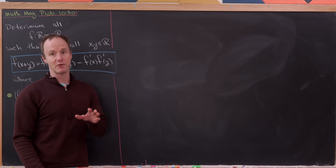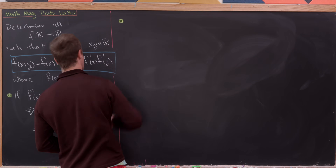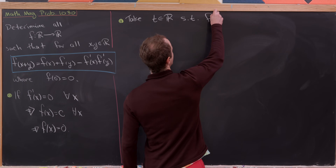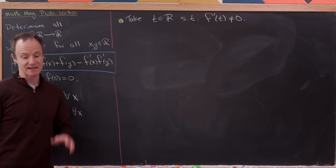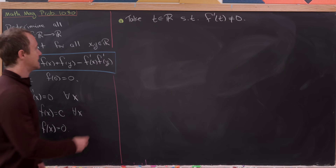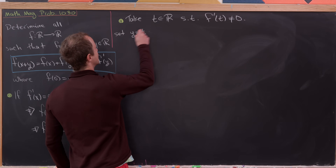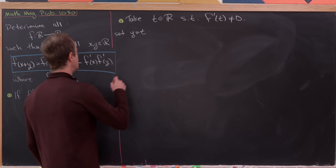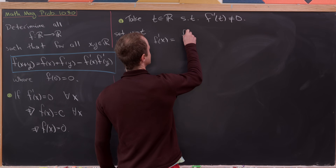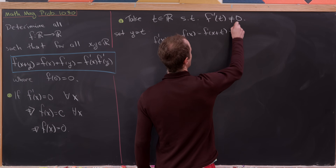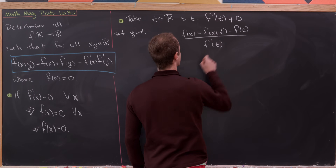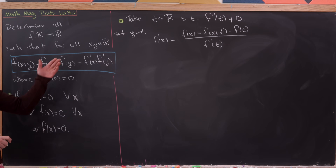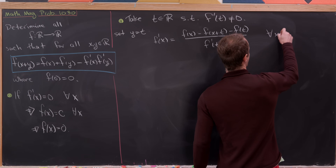If f'(x) is not always 0, we can find a place where it's non-zero. So let's take some number t such that f'(t) ≠ 0, fixing that value of t. Now I'll set y equal to t in our original functional differential equation, and observe that we can solve for f'(x) in terms of everything else. Notice that f'(x) = [f(x) - f(x+t) - f(t)] / f'(t), and this holds for all real x.